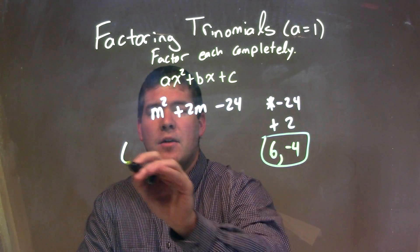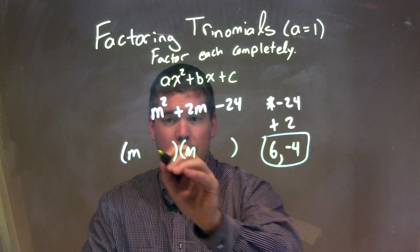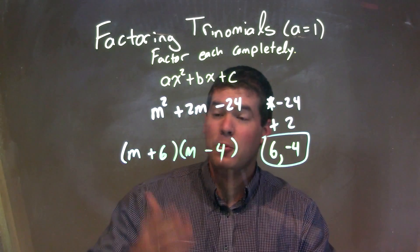So I'm going to break this out back in the form here. My two parentheses, my m values here, my variables, and m plus 6 and then m minus 4, and there we go.